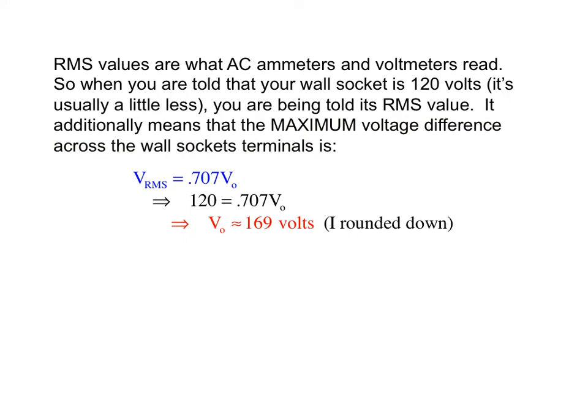What it additionally means is that the maximum voltage across the terminals of your wall socket is not 120 volts. Doing the math, you can see 120 is the RMS value. That equals 0.707 of the maximum. Apparently, the maximum is 169 volts. Actually, if you rounded it up, it would be 170. Most books write it out as 169.